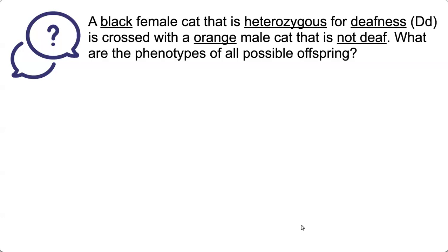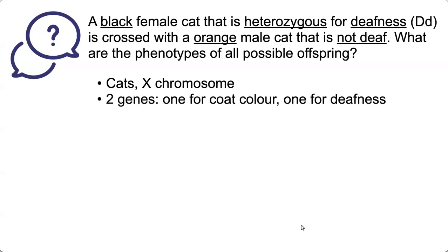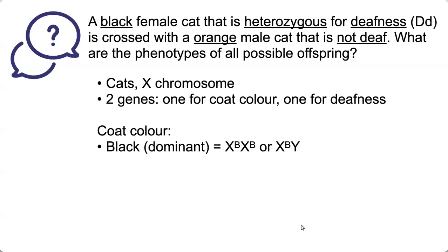I've taken the key points of the question and put them at the top. We have a black female cat heterozygous for deafness crossed with an orange male cat that is not deaf. The first step is to remember that we're dealing with the X chromosome and then to look at two different genes — one for coat colour and one for deafness.